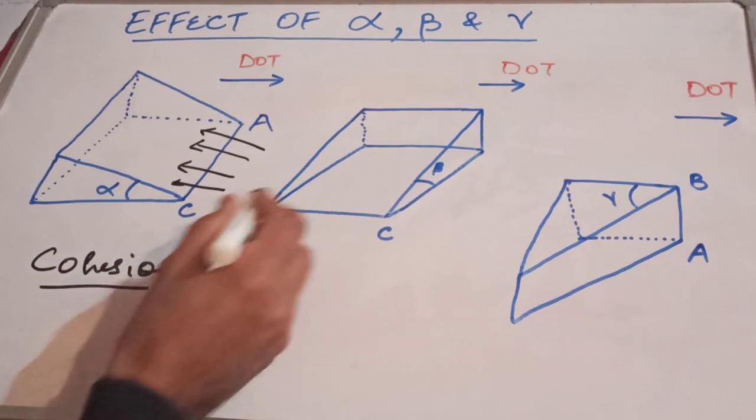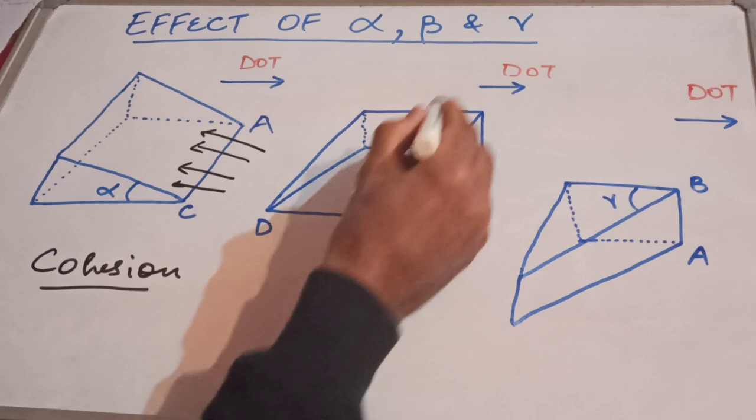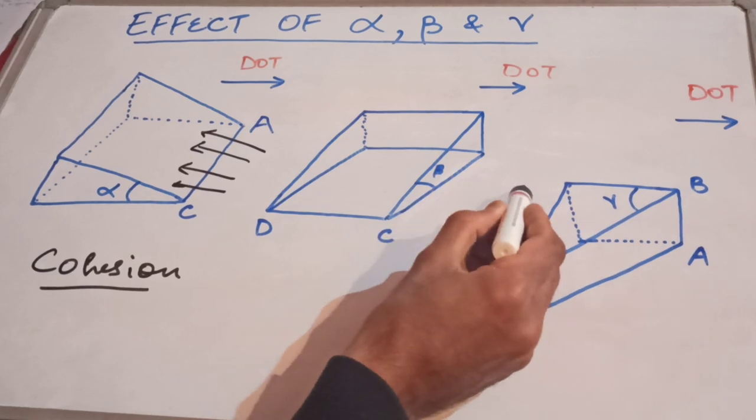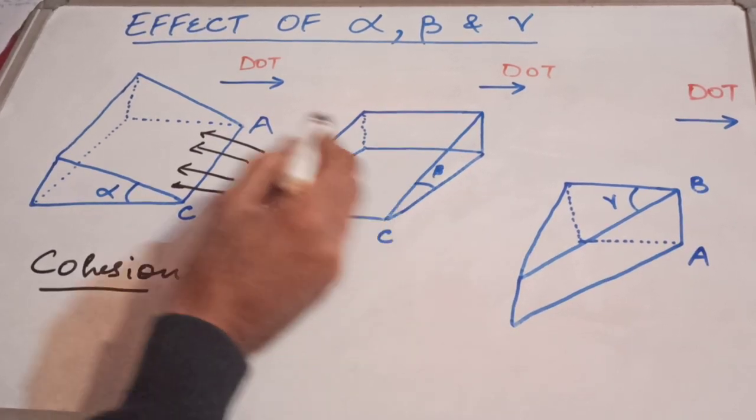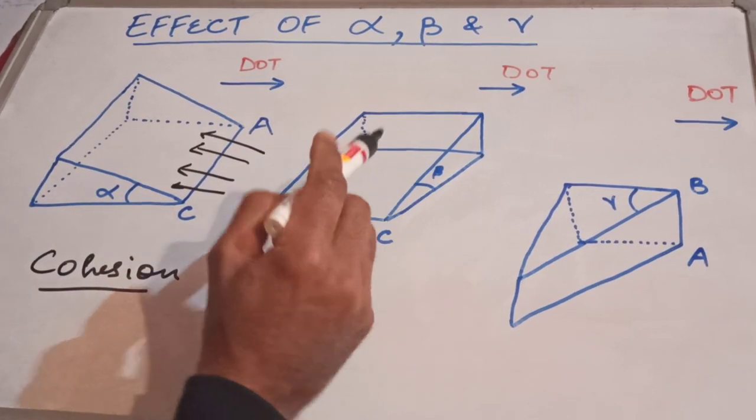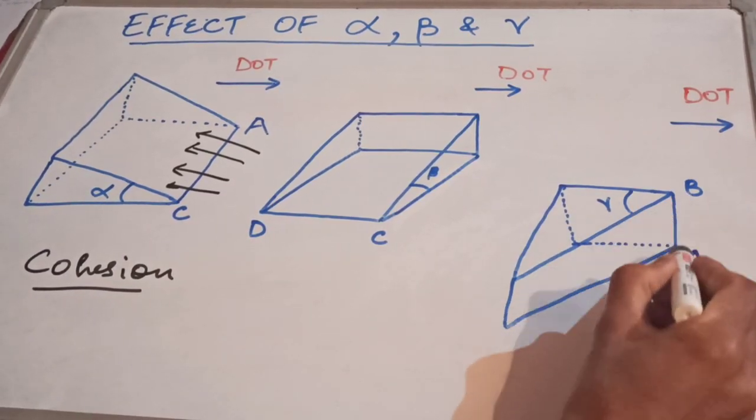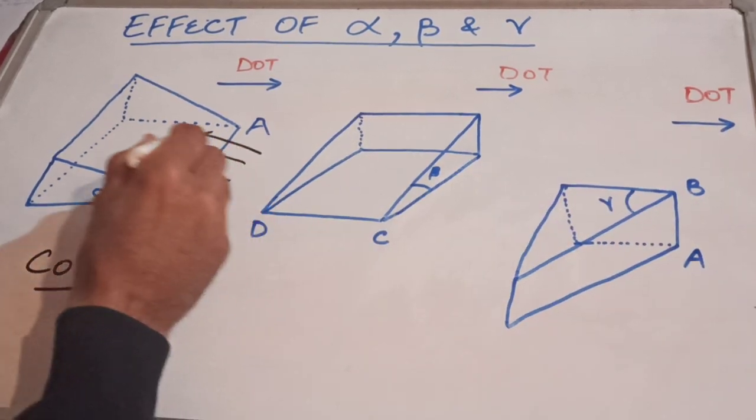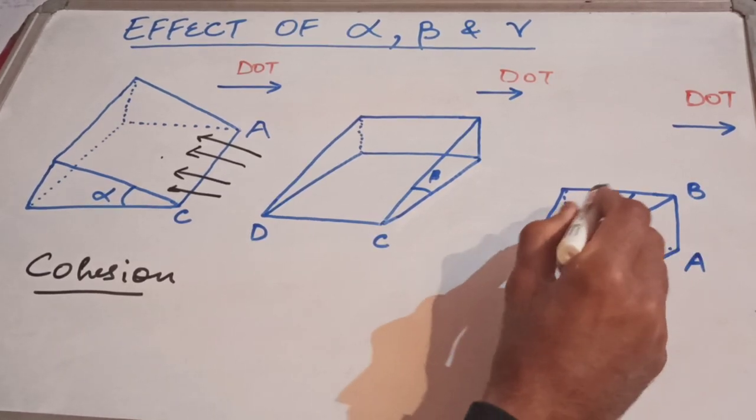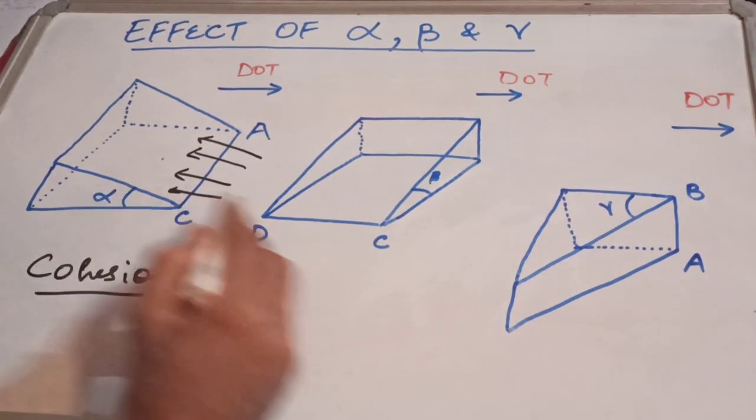This is angle beta, this side of the wedge. This side CD is actually parallel with the direction of travel. The soil comes on top of the surface and is turned because of alpha, the working surface, and beta. Third is your angle gamma.